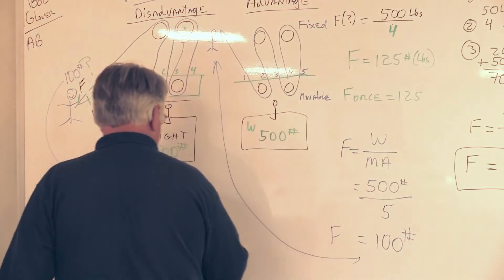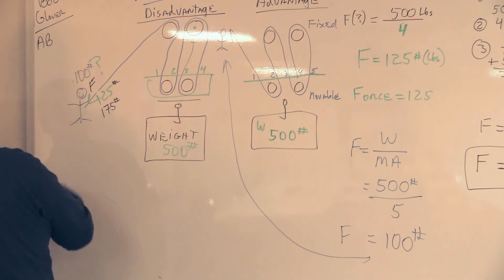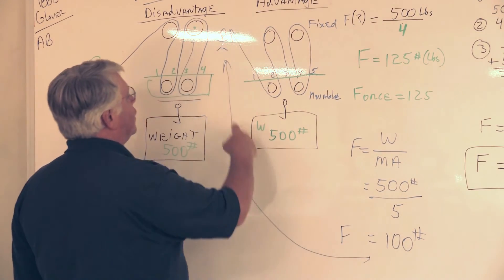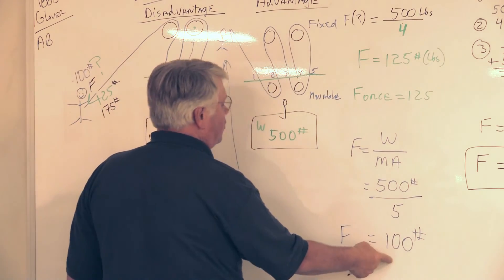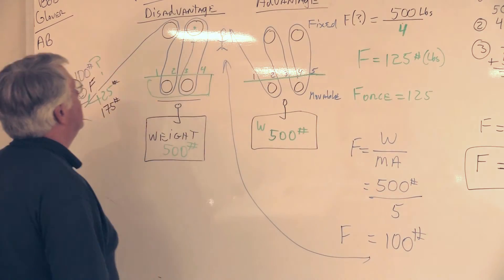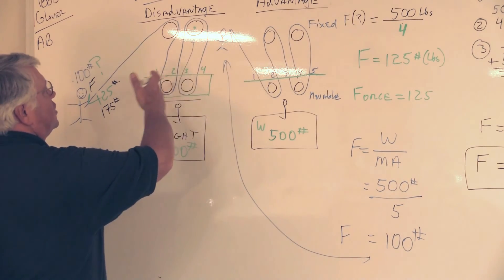And when we're at advantage, love modern whiteboards, correct our mistake. We're pulling here and we only have to pull at 100 pounds when we're rigged to advantage. So this is the difference between disadvantage.